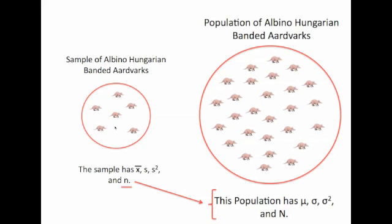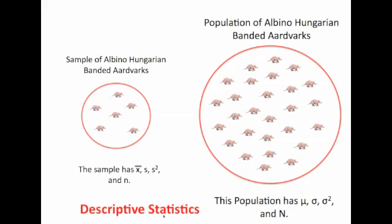A very small sample has a lot of probability of making a mistake. The bigger the sample, the better the prediction. Now these X-bar, S, S-squared, and N are descriptive statistics.